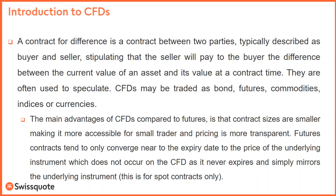I will show you on the platform the CFDs on the DAX and CFDs on crude oil. The main advantages of CFDs compared to futures is that contract sizes are smaller, making them more accessible for small traders, and pricing is more transparent. Future contracts tend to converge near to the expiration date to the price of the underlying instrument, which does not occur with CFD spot contracts as they never expire.